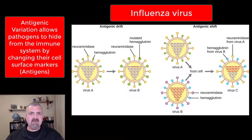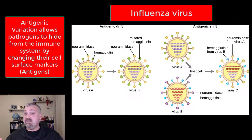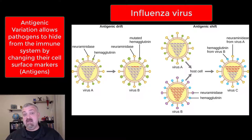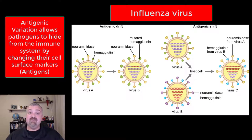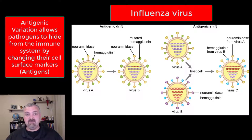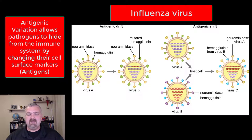Bacteria can do this as well. Borrelia burgdorferi, the causative agent of Lyme disease, can do this. Basically, every time someone has a fever with Lyme disease, you're seeing a change in the cell surface markers, and that's why it can become a chronic disease. You also have Neisseria gonorrhea, the causative agent of gonorrhea — it changes what its pili and cell surface structures look like for the same reason.